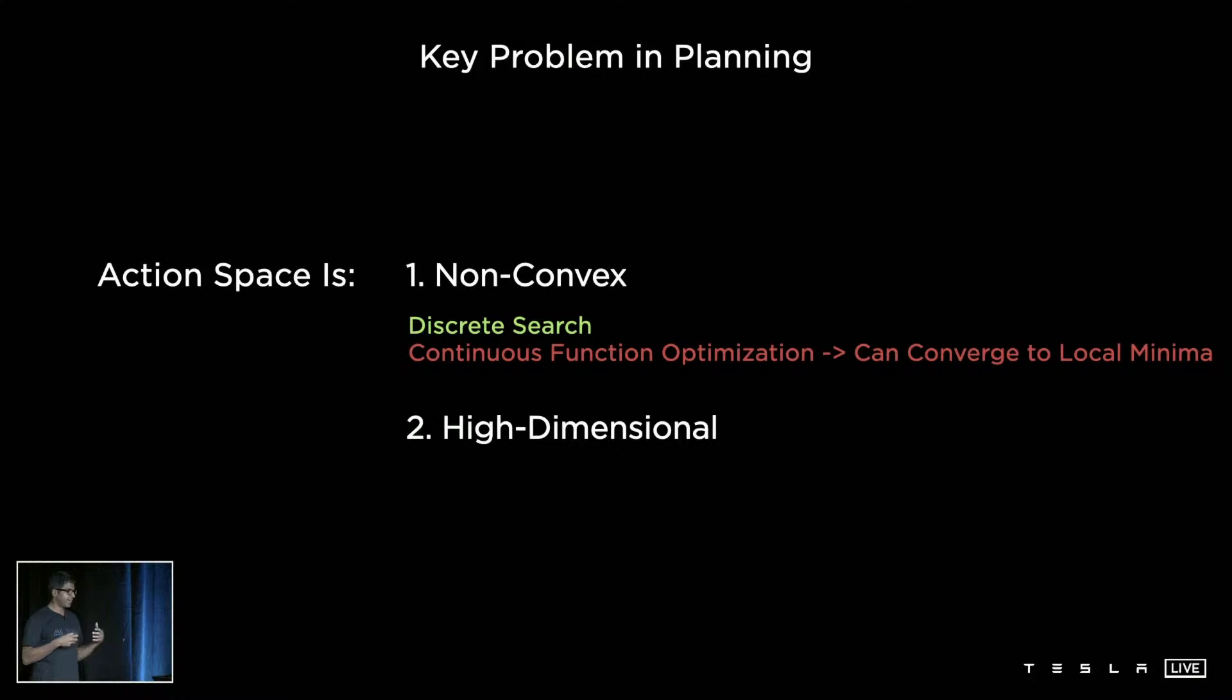And secondly, the high-dimensionality comes because the car needs to plan for the next 10 to 15 seconds. It needs to produce the position, velocities, and acceleration over this entire window. This is a lot of parameters to produce at runtime.